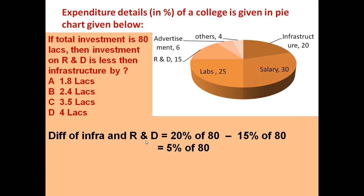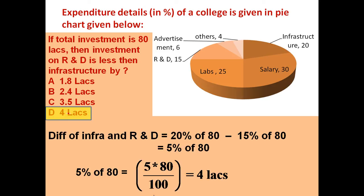To find the difference of infrastructure and R&D: on infrastructure, it is 20% of 80 lakhs, and on R&D, it is 15% of 80 lakhs. So the difference is (20 − 15)% = 5% of 80 lakhs = 5 × 80 ÷ 100 = 4 lakhs. So the answer is 4 lakhs.